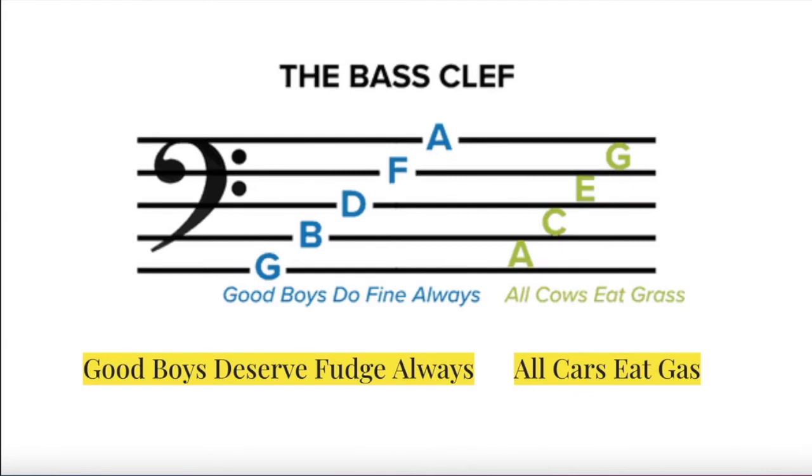The lowest line on the bass clef is a G. Try to memorize the order of the lines in ascending order with the mnemonic device, Good Boys Do Fine Always, or Good Boys Deserve Fudge Always.